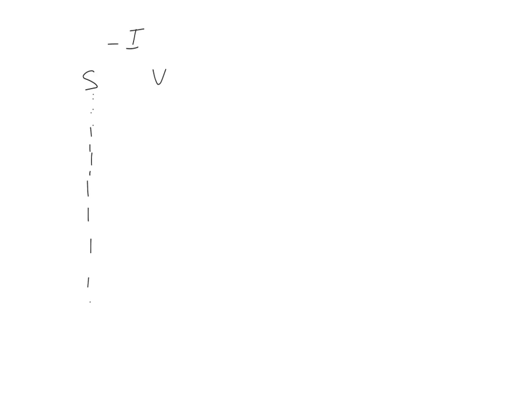We have different substrate concentrations and we measure the corresponding rates. Then what we do is we add some inhibitor, and again have substrate concentrations and measure the corresponding rates.